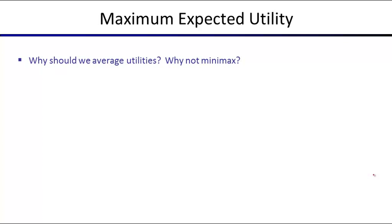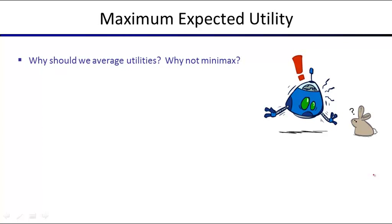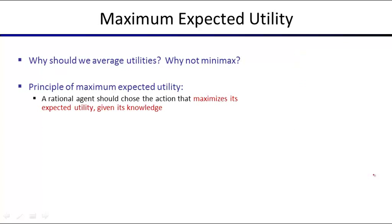Why are we even averaging utilities? You can't average a cat and a dog. Why not just run minimax? We know why: if you're too pessimistic, something can always go wrong, and the outcome for pretty much every scenario will be 'I'm going to die, it doesn't matter what I do.' That's why we still care about expectimax. The principle we'll look at, which we mentioned in the very first lecture, is maximum expected utility.